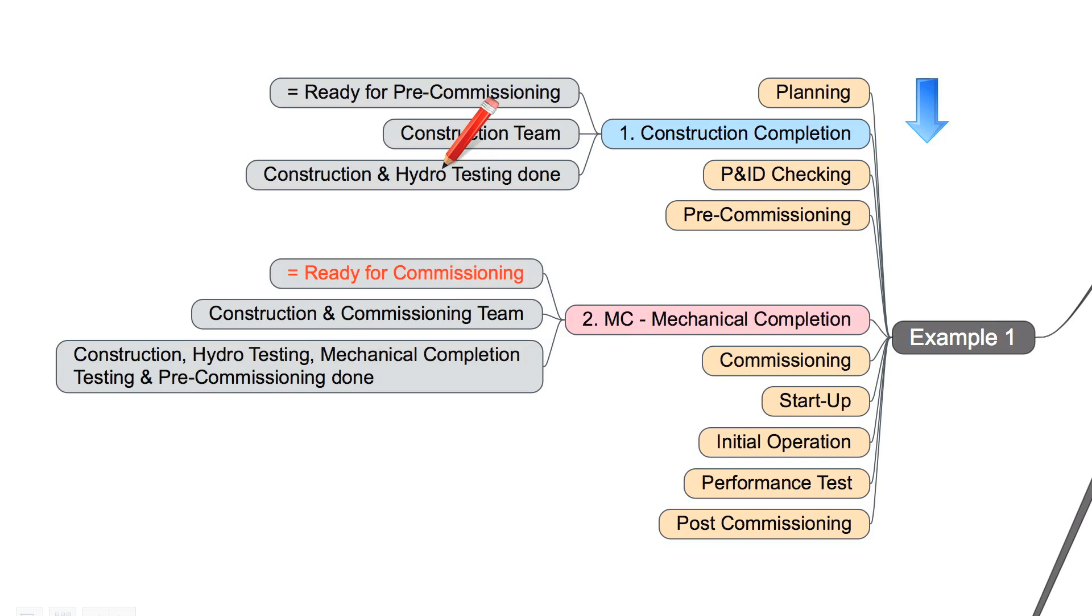Example number one. Here you can see our key elements for successful plant commissioning. It starts with planning, goes through construction completion, P&ID checking, pre-commissioning, mechanical completion, commissioning, startup, initial operation, performance test and post-commissioning. And in this example you can see mechanical completion means it's ready for commissioning.